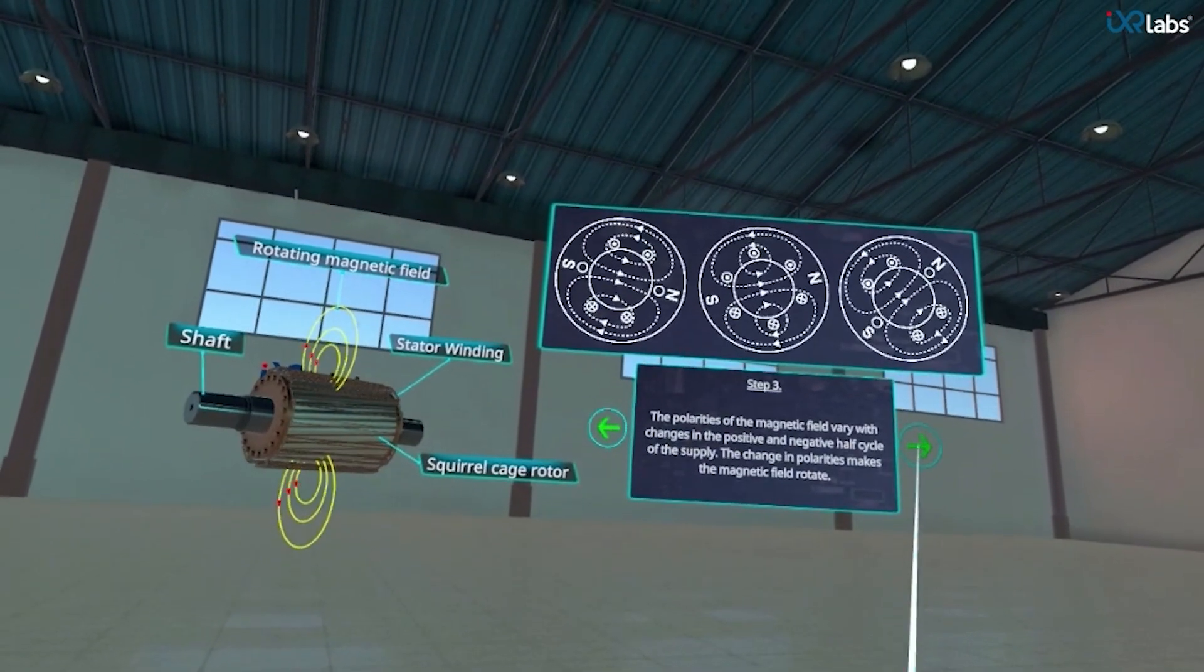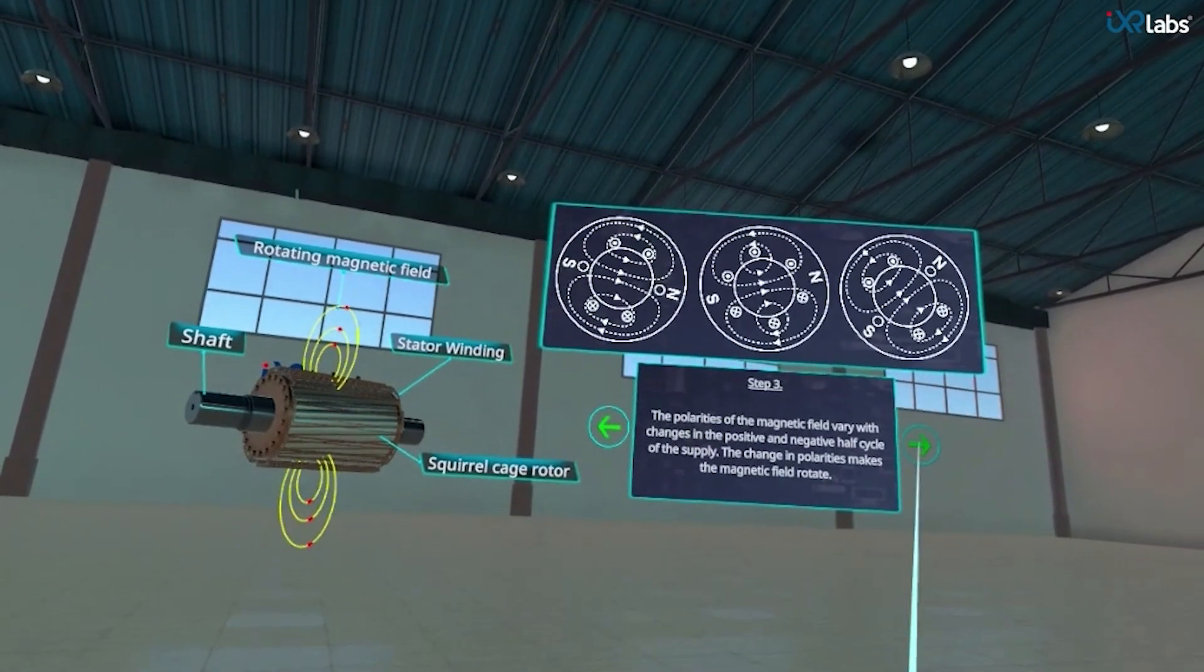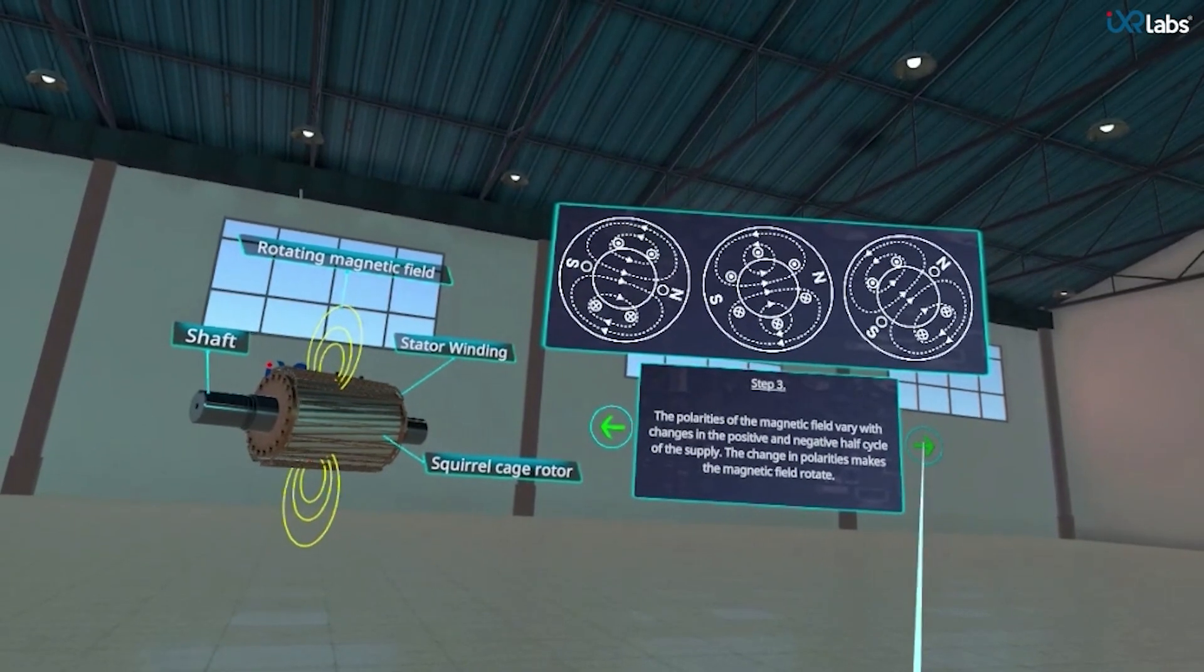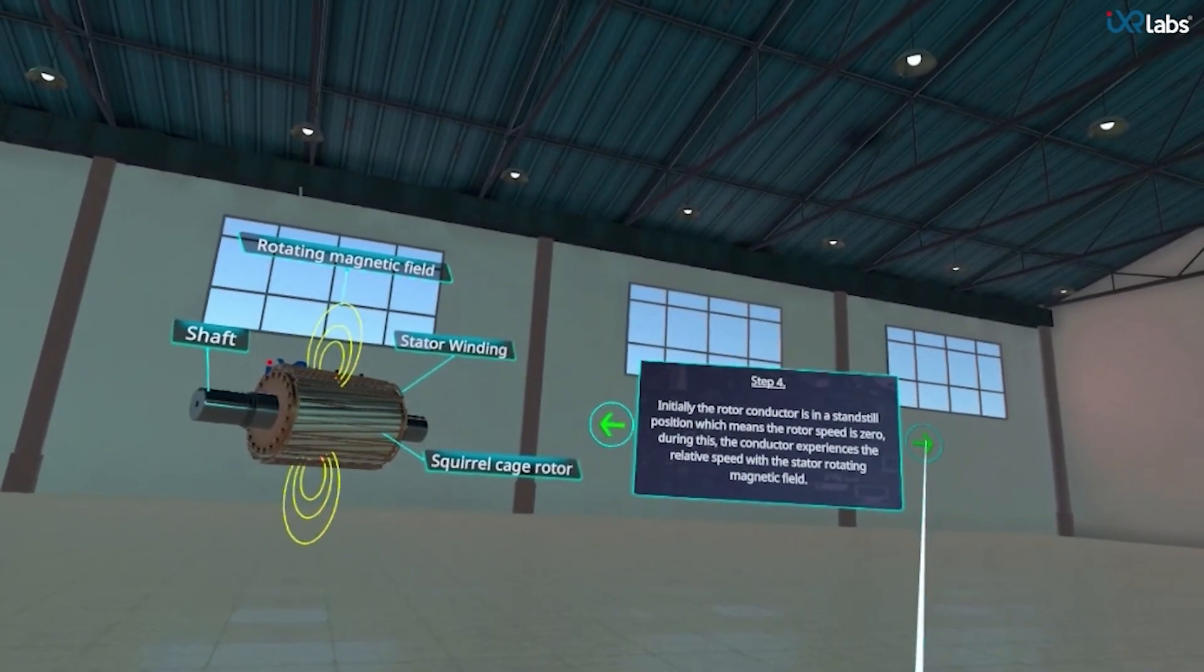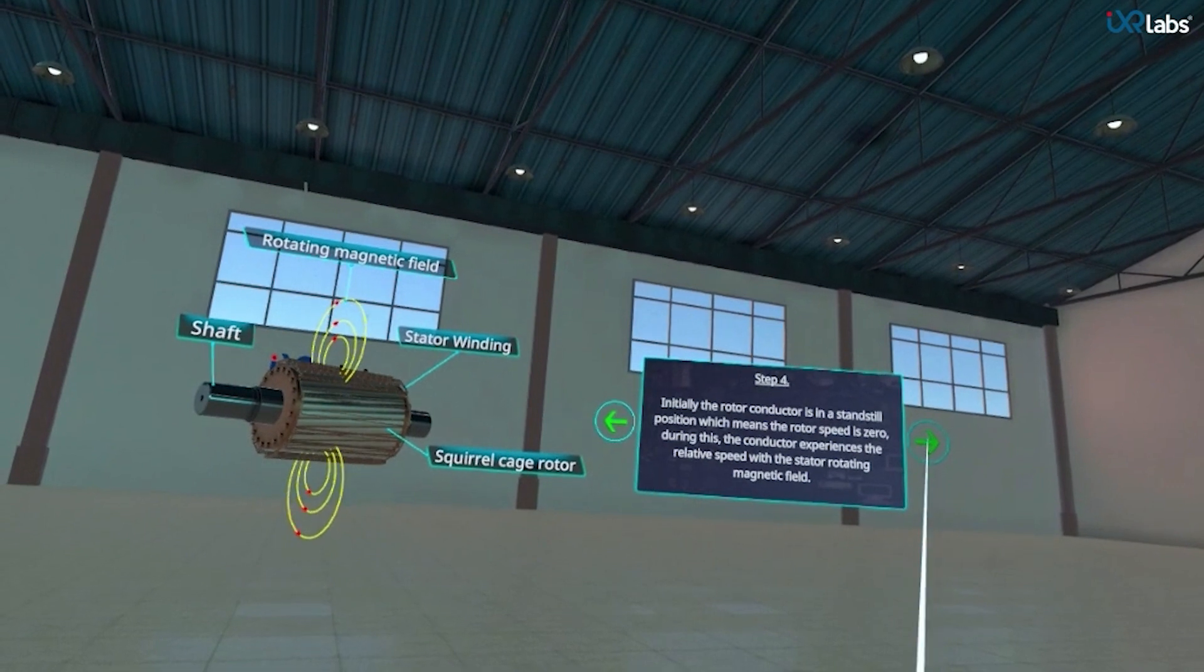In step 3, the magnetic field rotates as it varies with changes in the positive and negative half cycle of the supply. In step 4, the conductor experiences the relative speed with the stator rotating magnetic field.